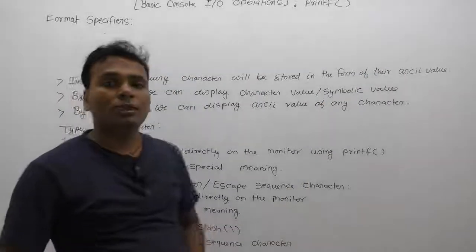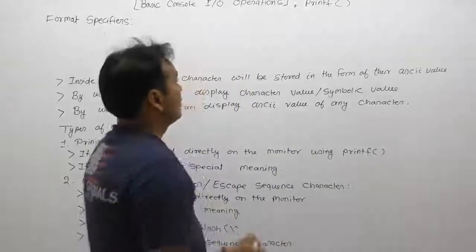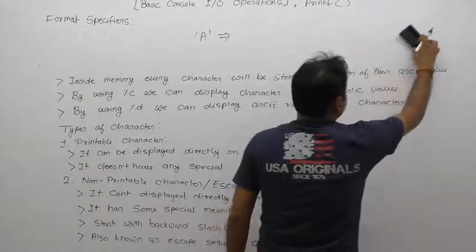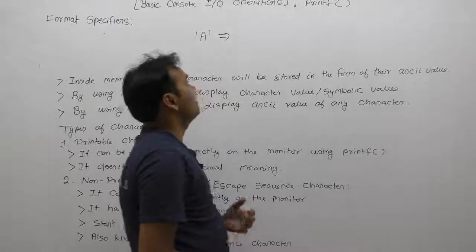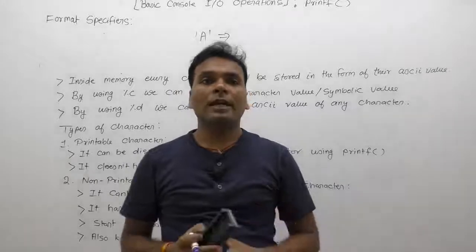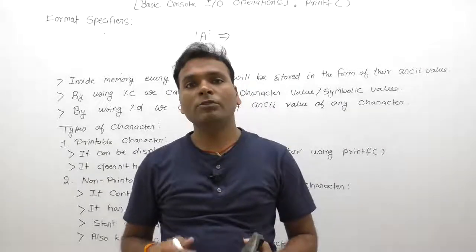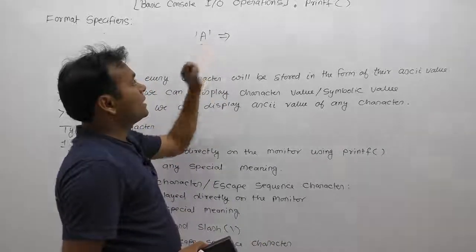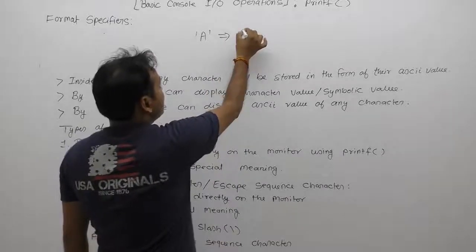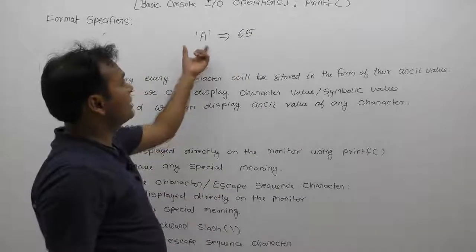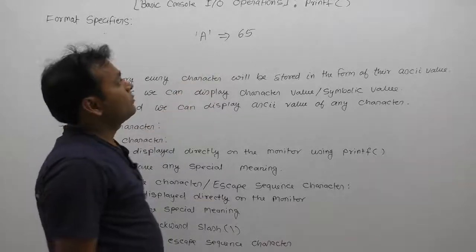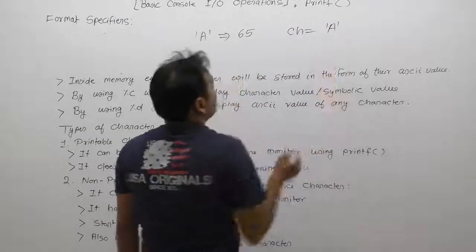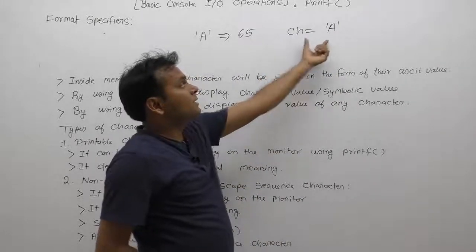Inside memory, every character is stored in the form of its ASCII value. For example, how is the character 'a' represented inside memory? Every information is stored inside memory in the form of binary values. We cannot generate a binary value directly for a character, so every character is associated with an ASCII value. Different characters have different ASCII values. Whenever we store 'a' inside memory, the binary number of 65 is stored.